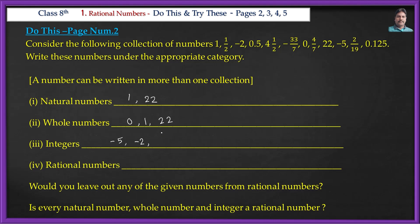Integers include 0, 1, and 22 as well. Next, rational numbers: rational numbers include fractional numbers and decimal numbers. So 1 is equal to 1/1, and -2 is equal to -2/1 — these are all rational numbers.